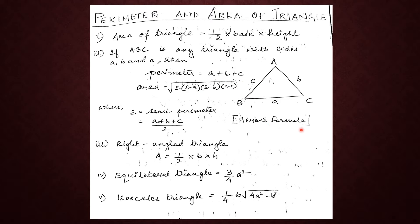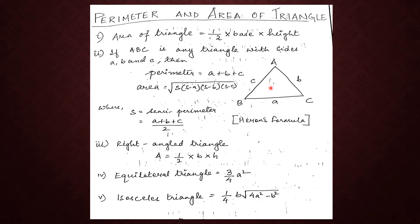In order to use Heron's formula, we need to first find out the semi-perimeter. To find the semi-perimeter, you add the measurements of all three sides and divide by two. Then use Heron's formula to find out the area of the triangle. The perimeter can be found by simply adding the measurements of all three sides.